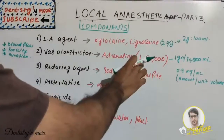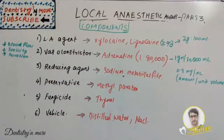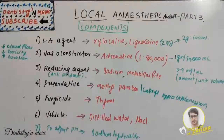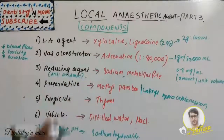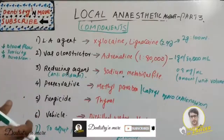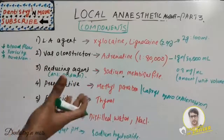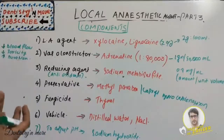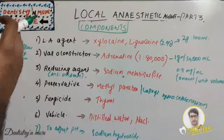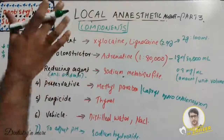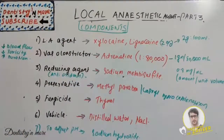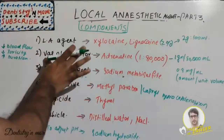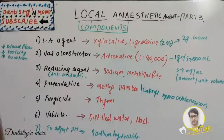The next component is reducing agent, also called antioxidant. The product used is sodium metabisulfate. The vasoconstrictor has one problem — it is very unstable in solution and may oxidize, especially on prolonged exposure to sunlight. Once oxidized, the color turns brown, which indicates the solution must be discarded. To prevent this, we add sodium metabisulfate as a reducing agent, which competes for available oxygen and increases the shelf life of the local anesthetic solution.